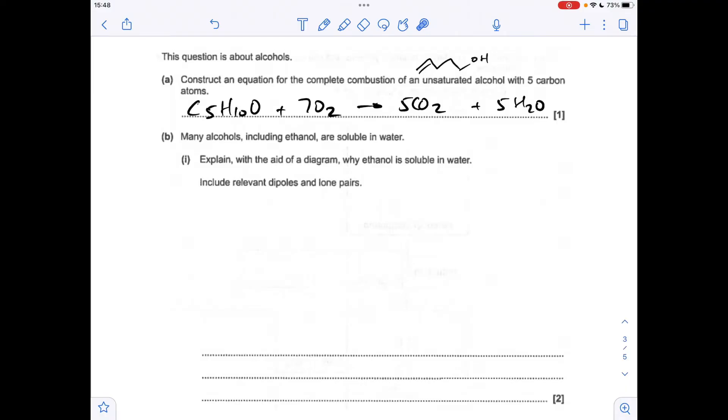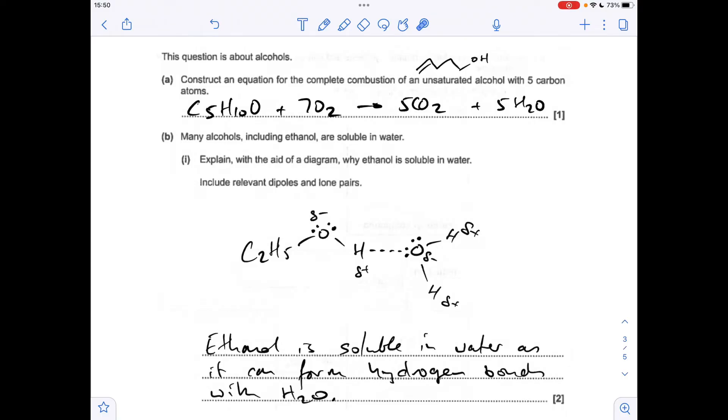Part B: why is ethanol soluble in water? Your classic diagram where you show the dipole across the OH bond and the dipole in the water. You've got to show the lone pairs on the oxygen and you've got to draw a dotted line from the lone pair on an oxygen to the delta positive hydrogen on a neighboring molecule. Obviously these are hydrogen bonds, so ethanol is soluble in water because it can form hydrogen bonds with the H2O.